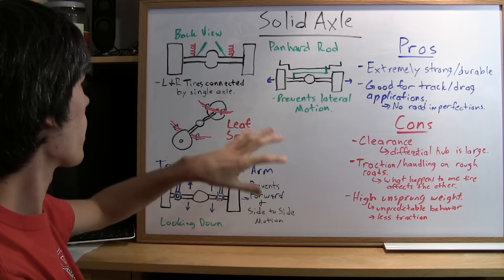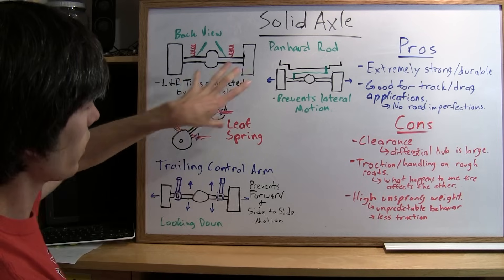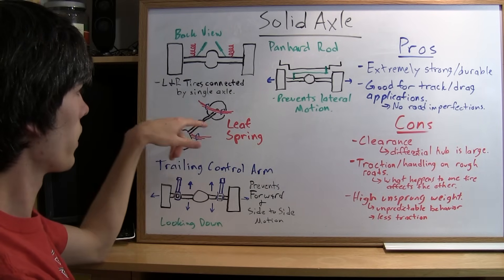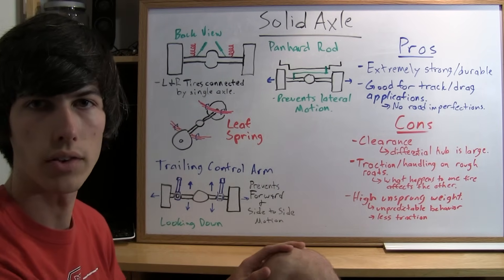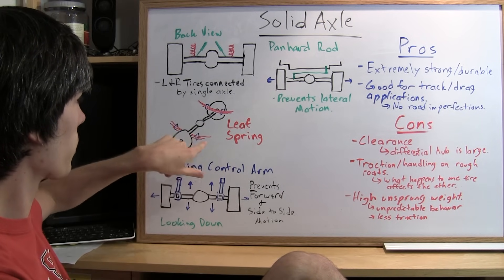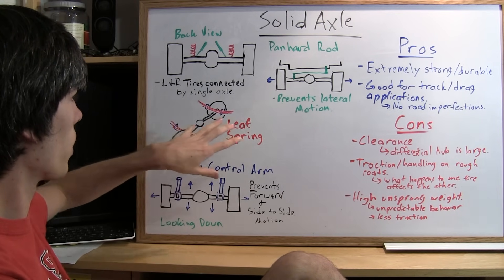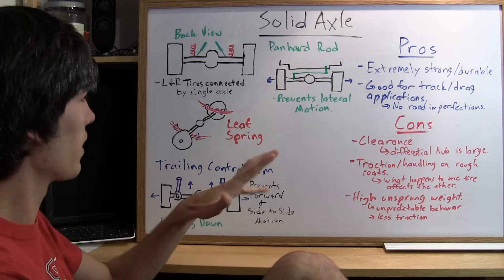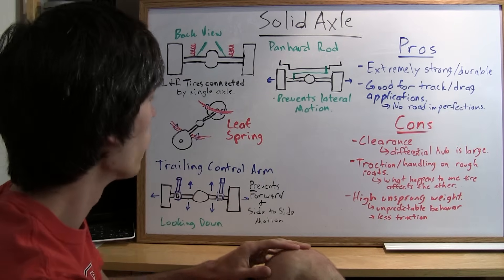There are different ways of doing this. One way is using leaf springs, which you'll very often see on the backs of pickup trucks. Basically, the leaf springs prevent any sort of horizontal movement, but they don't do a very good job of it, so there are better ways of getting this done.